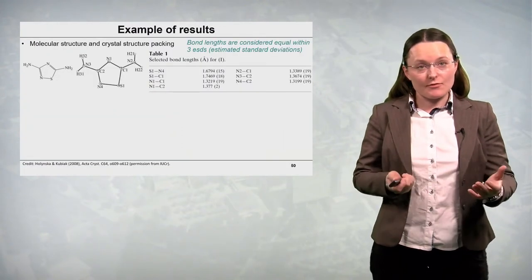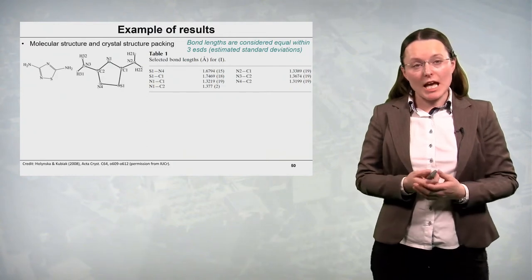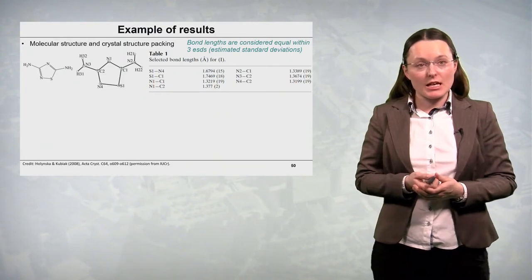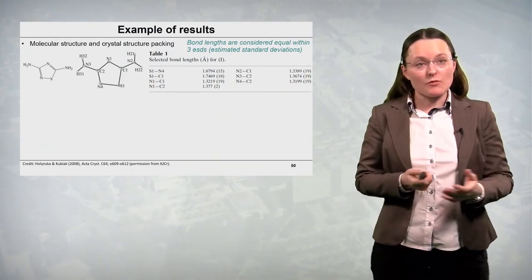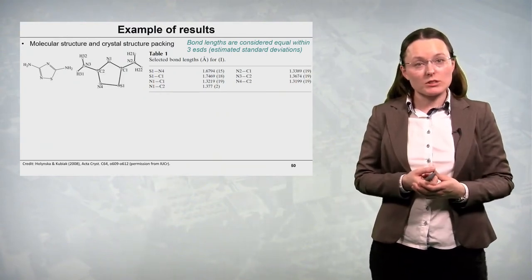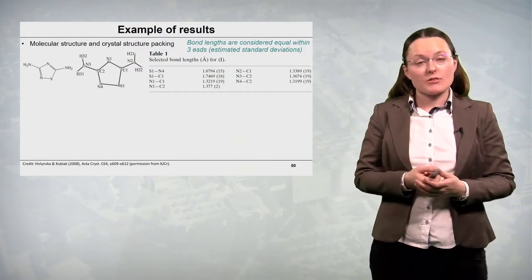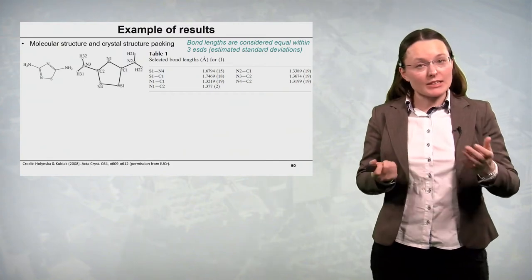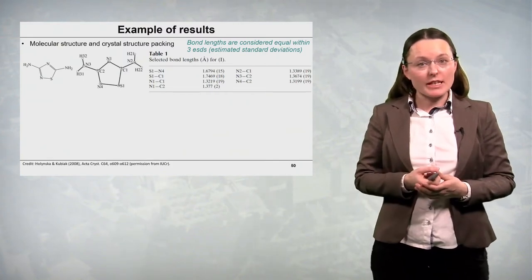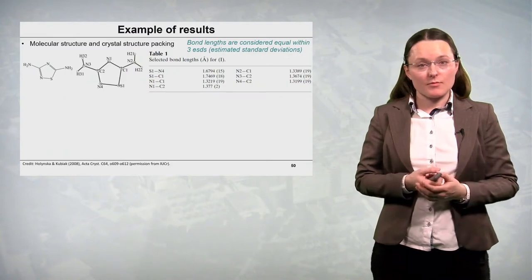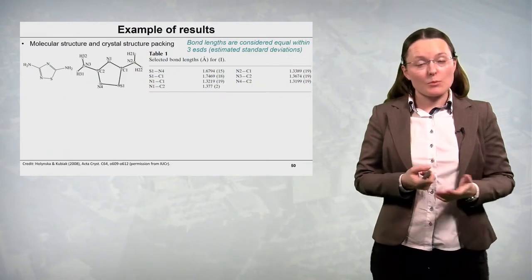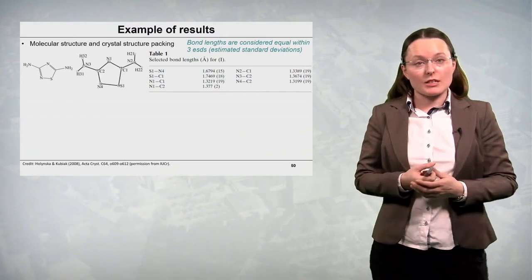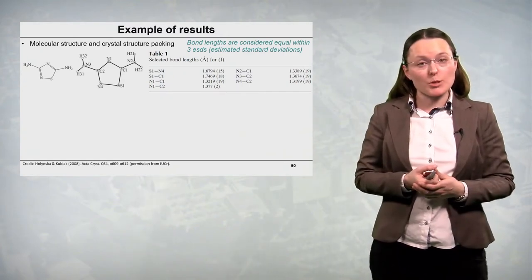Then we have some information about the molecular structure of the compound which was investigated. So we have the sum formula, it's an organic compound, we have a plot, thermal ellipsoid plot at 30% probability level and we have a table, selected bond lengths quoted in angstroms and these bonds are marked in accordance with the atom labeling scheme on the thermal ellipsoid plot.